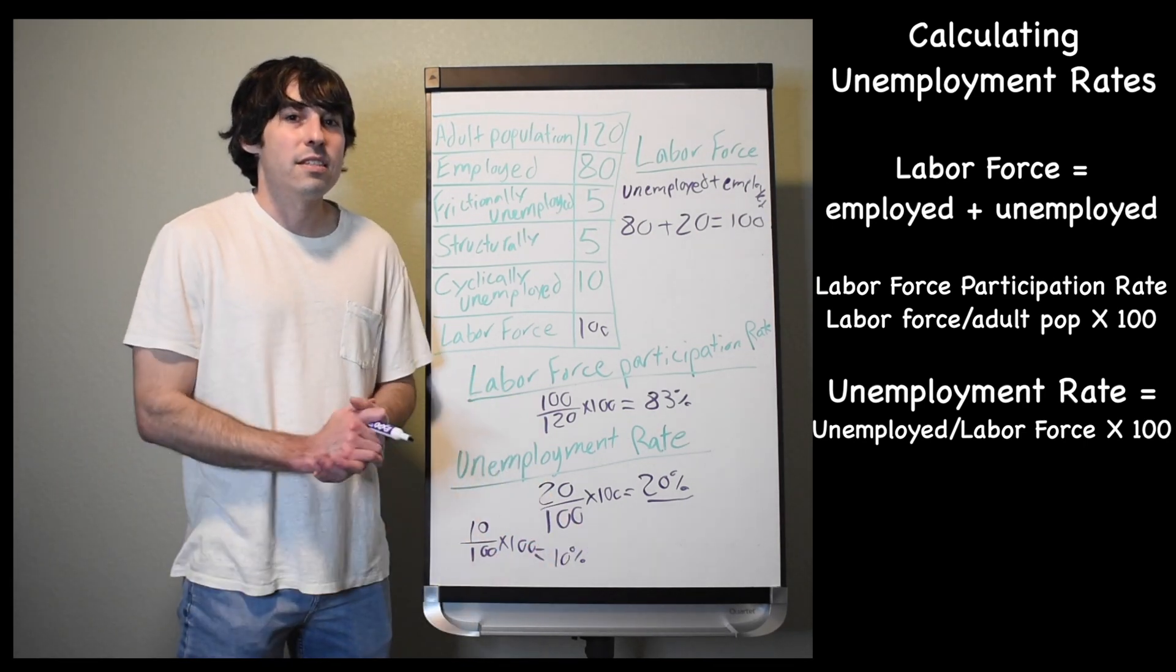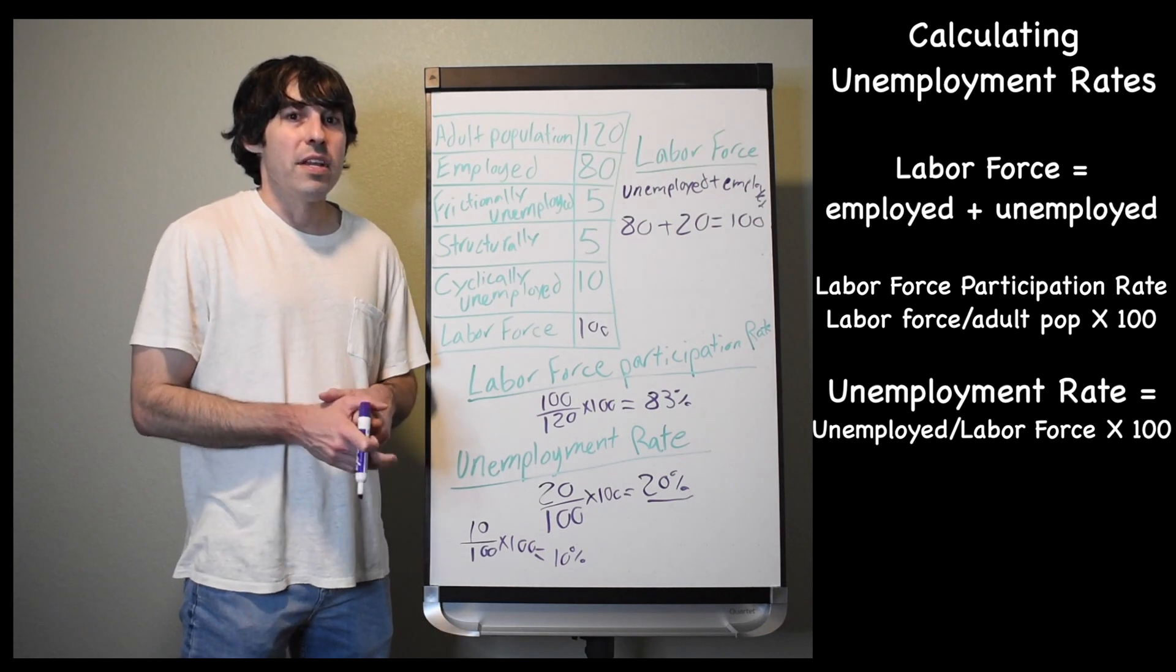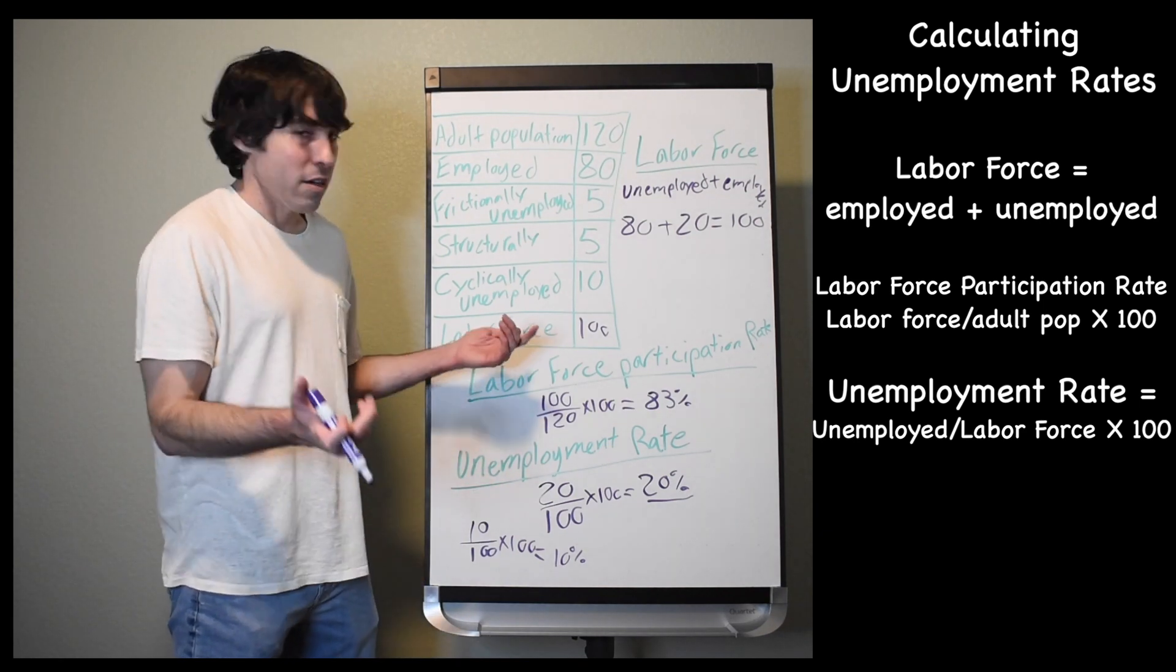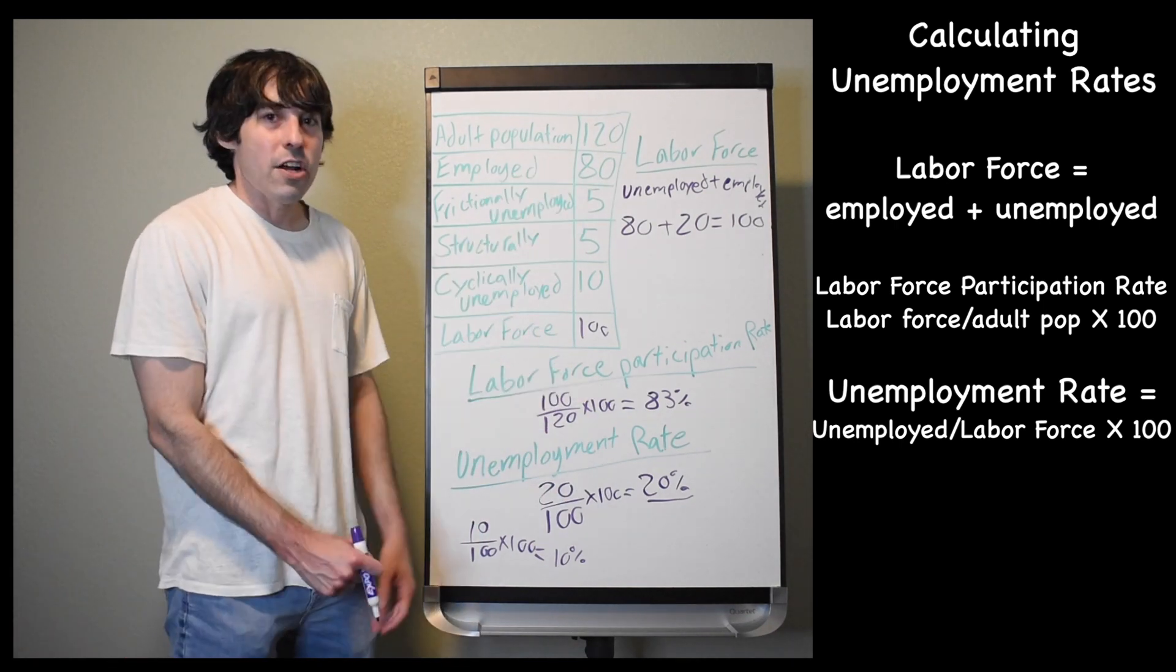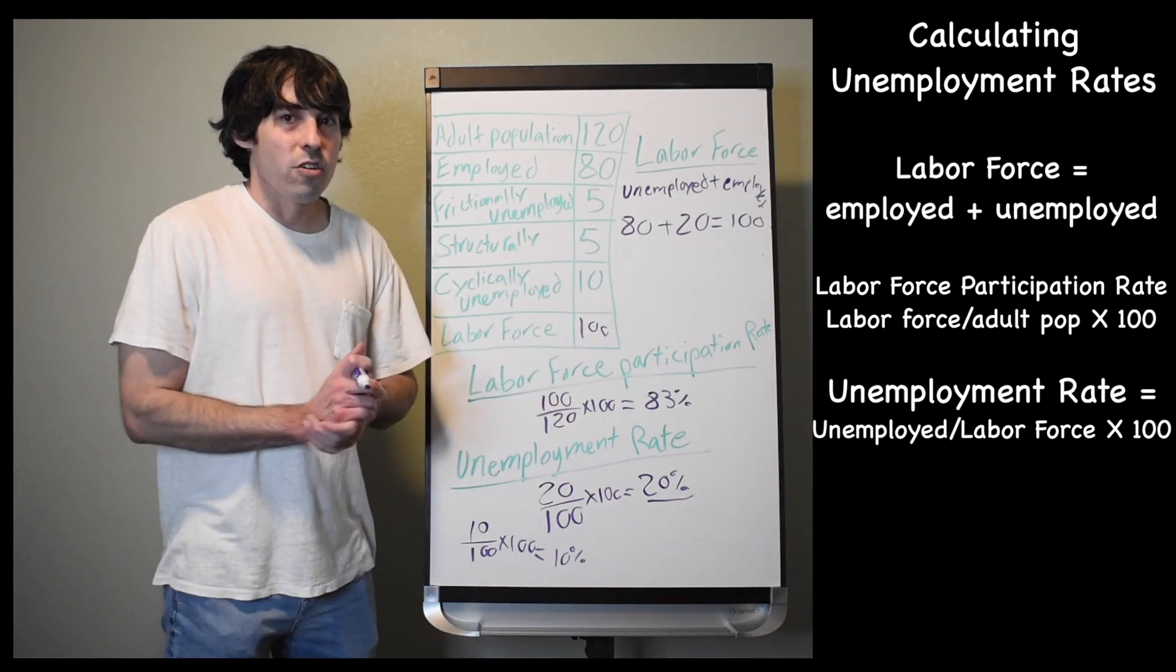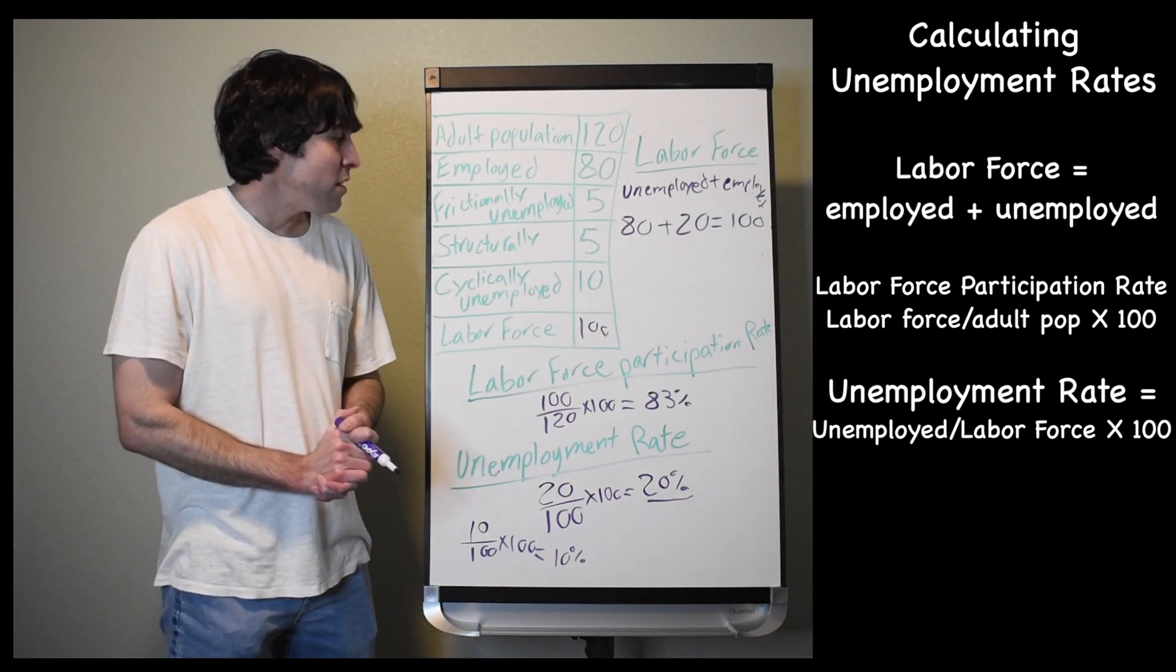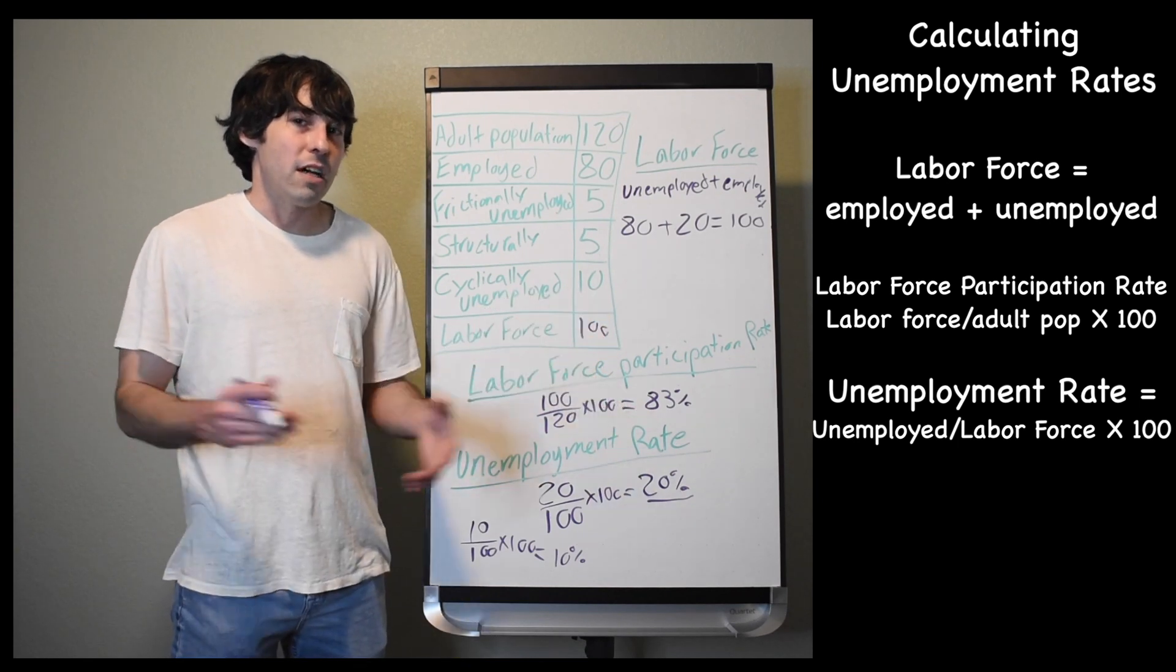...then I have a 10% cyclical unemployment rate, which means this country is in a recession, and we need to do something to fix that so people get their jobs back. So again, you can tell looking at this data right away that they're in a recession because they're experiencing cyclical unemployment. You're only going to see that in a recession. So if this number is anything other than zero, you got a recession going on.